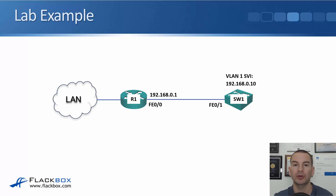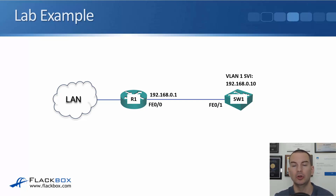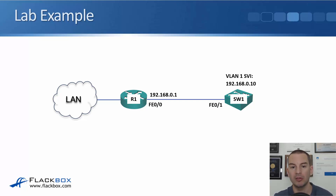For the lab example, we've got router R1, and we're going to configure IP address 192.168.0.1 on the physical interface FastEthernet0/0. That's going to be the default gateway address for switch SW1, which is connected to the router through FastEthernet0/1 and will be in VLAN 1 by default. For the management IP address, we'll configure that on the VLAN 1 switched virtual interface — 192.168.0.10. We'll also configure the switch with an IP default gateway of 192.168.0.1.